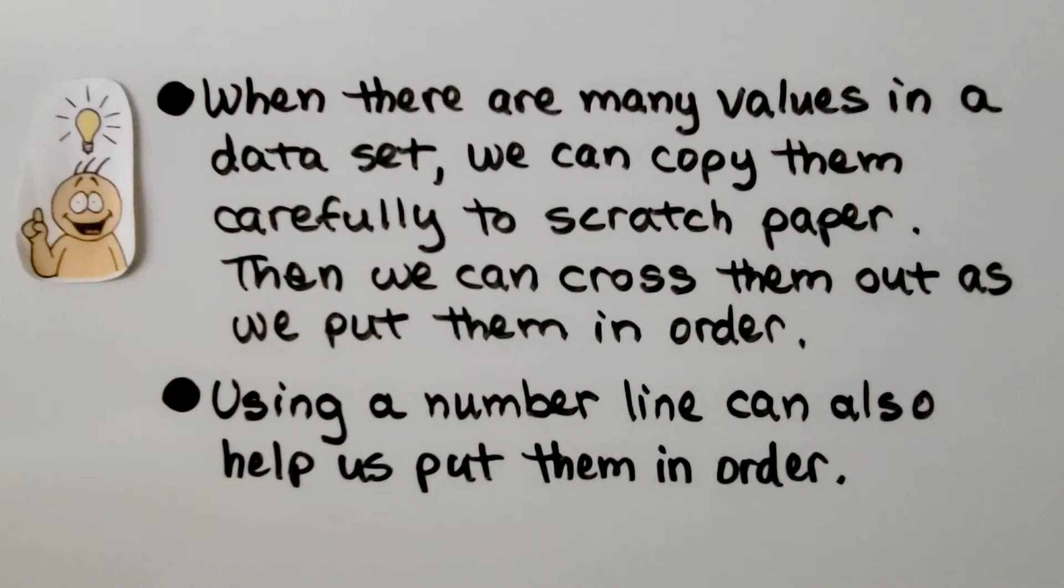When there are many values in a data set, we can copy them carefully to scratch paper, then we can cross them out as we put them in order. We can also use a number line to help us put them in order.